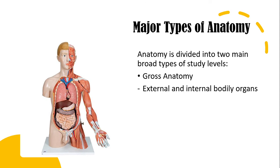There are two major types of anatomy: gross anatomy and microscopic anatomy. Gross anatomy is the study of anatomical structures that can be seen by the naked eye. For instance, here we have an image of the human torso, and we can easily see the skin, the muscles, the tendons, and main organs located inside the human torso.